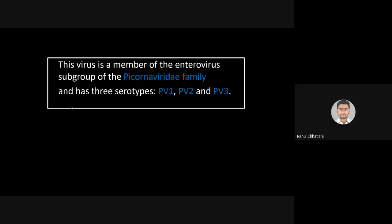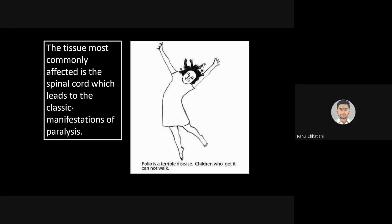The virus is a member of the enterovirus subgroup of the Picornaviridae family. There are three serotypes: poliovirus type 1, poliovirus type 2, and poliovirus type 3. All three are equally capable of producing infection in human beings. The tissue most commonly affected is the spinal cord, which leads to the classic manifestation of paralysis.